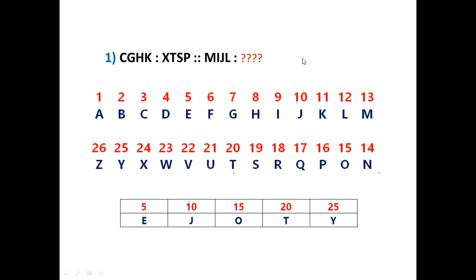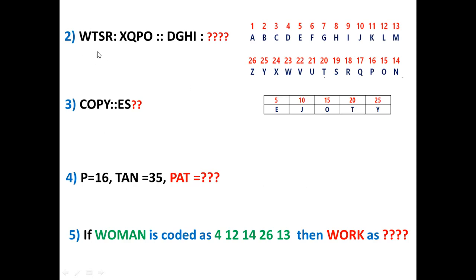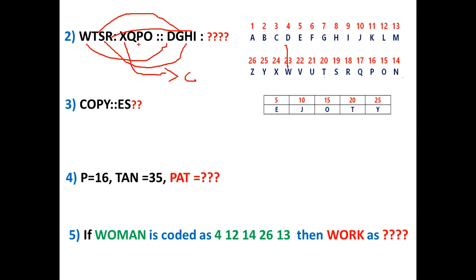Let me take one more question. WTSR — this is also a similar kind of thing. W opposite is D — DW. T opposite is G — grand total. H opposite is S — high school. I opposite is R — IR radiation. So X opposite is C, Q opposite is J — Jack Quinn. P opposite is K — Karthik Pavan. O opposite is L — LOMGA. If you remember this table, you can solve any problem in only one second.